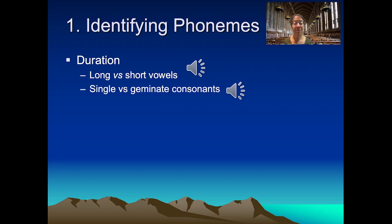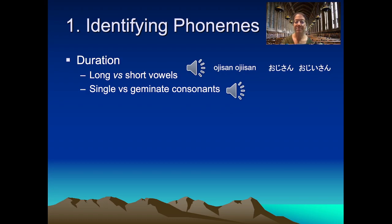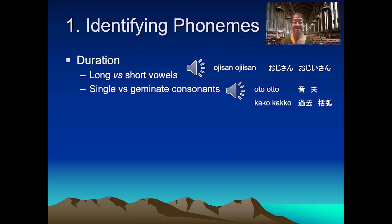When looking at identifying phonemes, duration is one of the most significant prosodic cues. We can see changes in duration that distinguish between phonemes in long and short vowels. Here are examples from Japanese: the word for uncle is distinguished from grandfather just by the duration of the vowel. We can also have contrasts between single and geminate consonants, distinguishing between words like sound and husband, and past and parentheses.